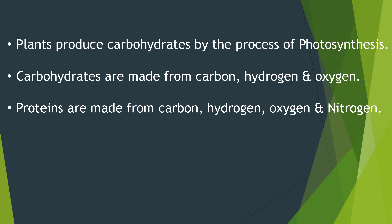Plants produce carbohydrates by the process of photosynthesis. Carbohydrates are made from carbon, hydrogen, and oxygen. Proteins are made from carbon, hydrogen, oxygen, and nitrogen. From where do plants obtain the nitrogen necessary for the synthesis of proteins? Air contains nitrogen, but plants cannot utilize gaseous nitrogen — it needs to be fixed. That is, the gaseous nitrogen needs to be converted into compounds called nitrates and nitrites, which can then be absorbed by the plants.